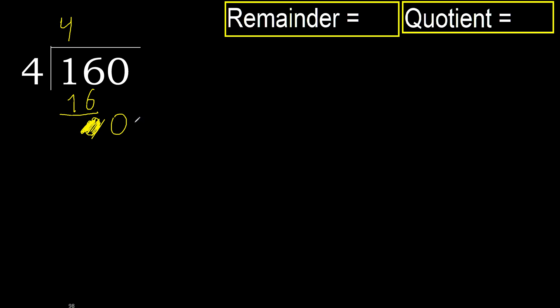That is not a number, therefore finish it here. Complete — always complete with 0. Complete with 0 because here we finish it with this number.